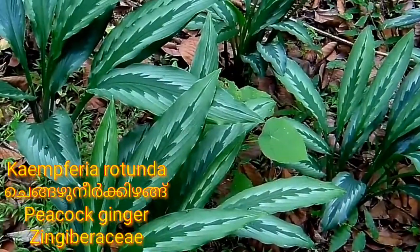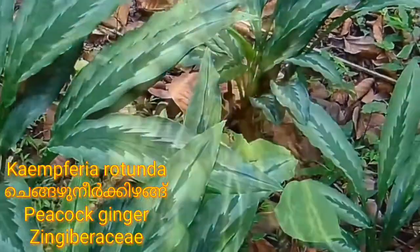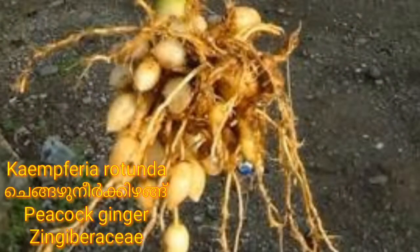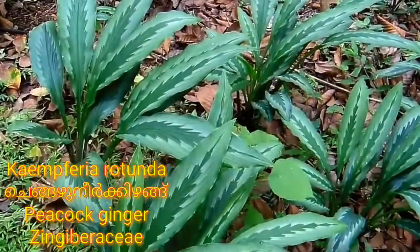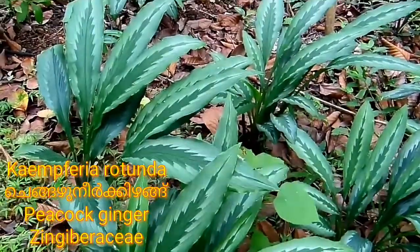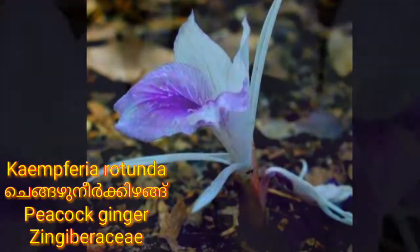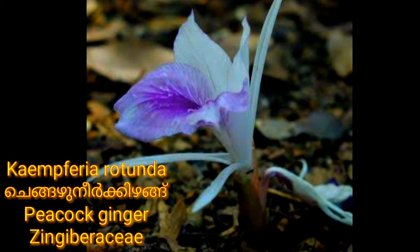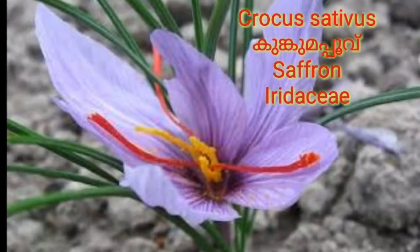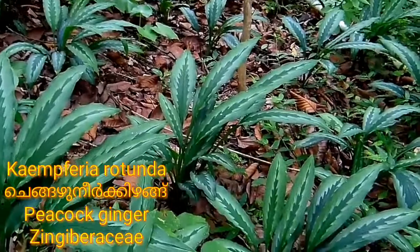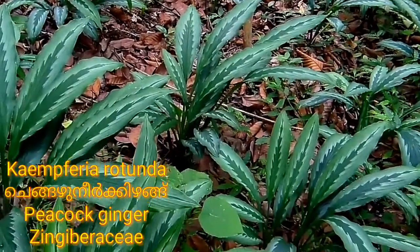Kaempferia rotunda is an aromatic rhizomatous perennial herb with many tuberous roots. The plant belongs to the Zingiberaceae family. The leaves are erect, three to four oblong or ovate. Flowers are large, very attractive and indigo in color. The flowers emerge straight from the ground even before the leaves appear, like the emergence of saffron flowers. So the plant is called Bhuchampaka in Sanskrit and Indian Crocus as a common name.